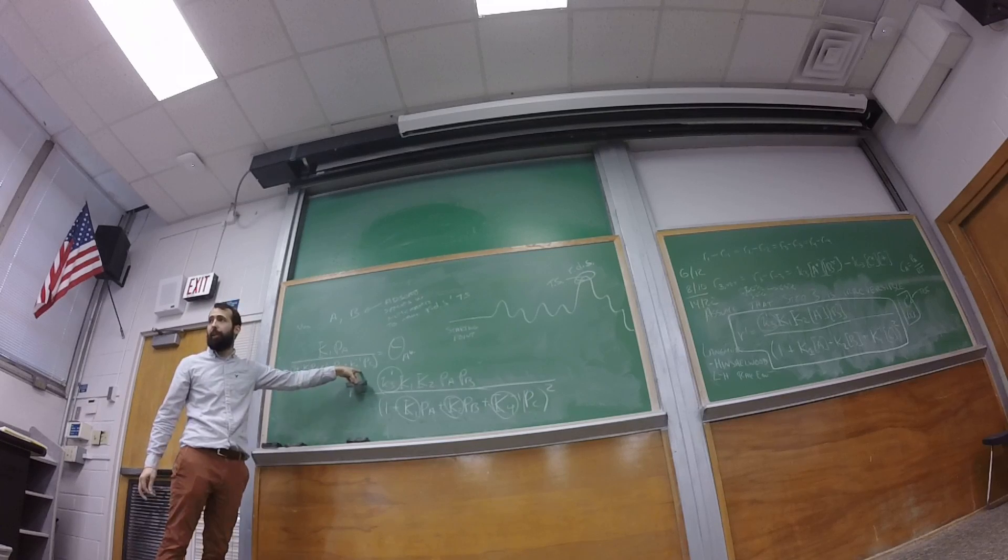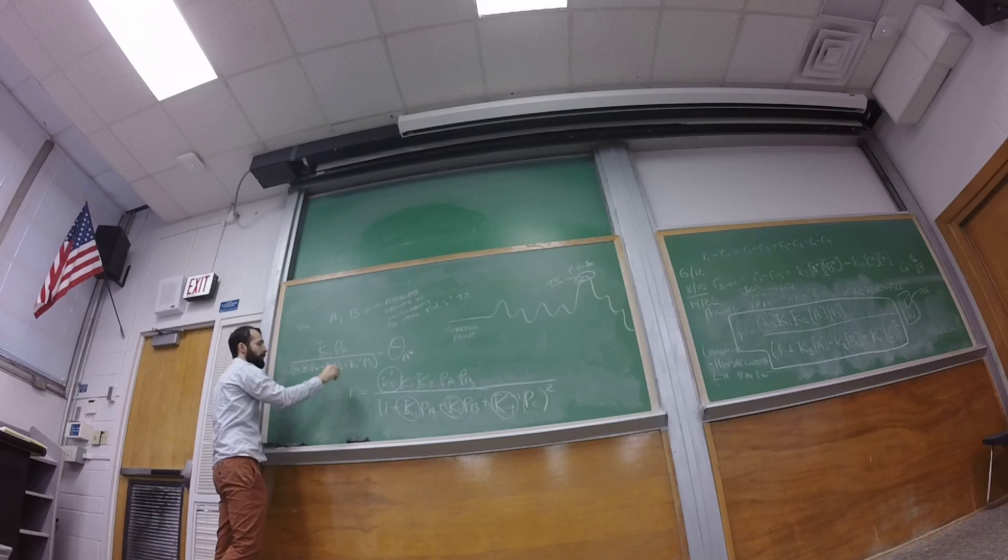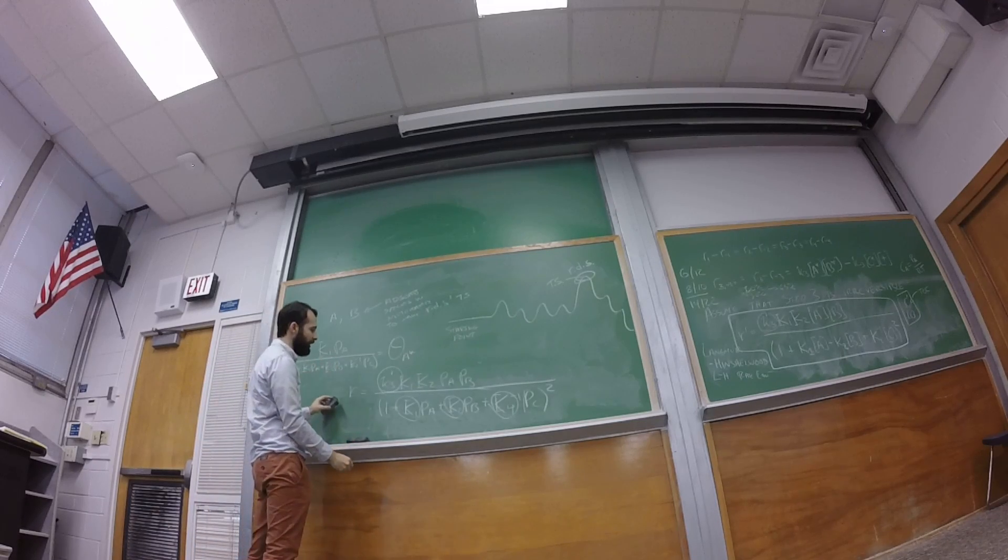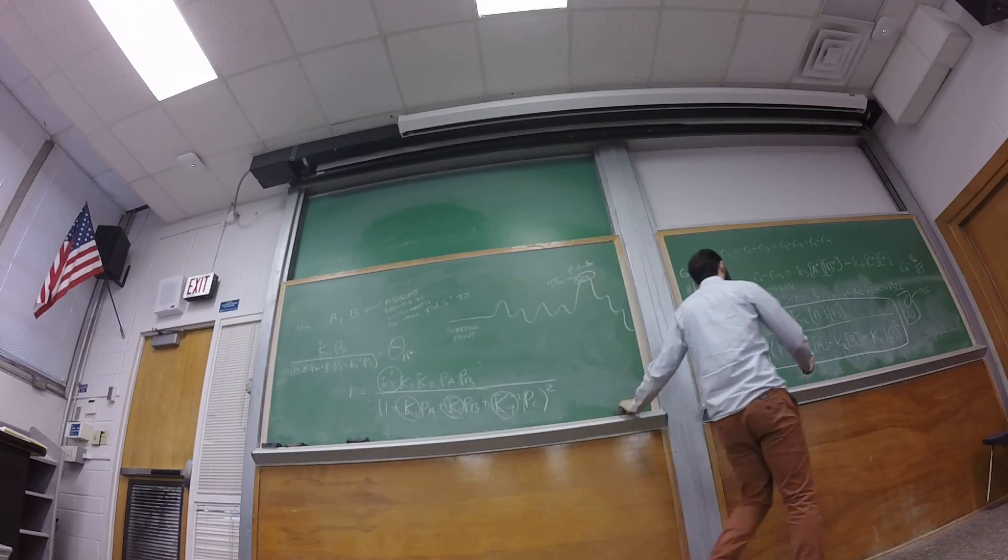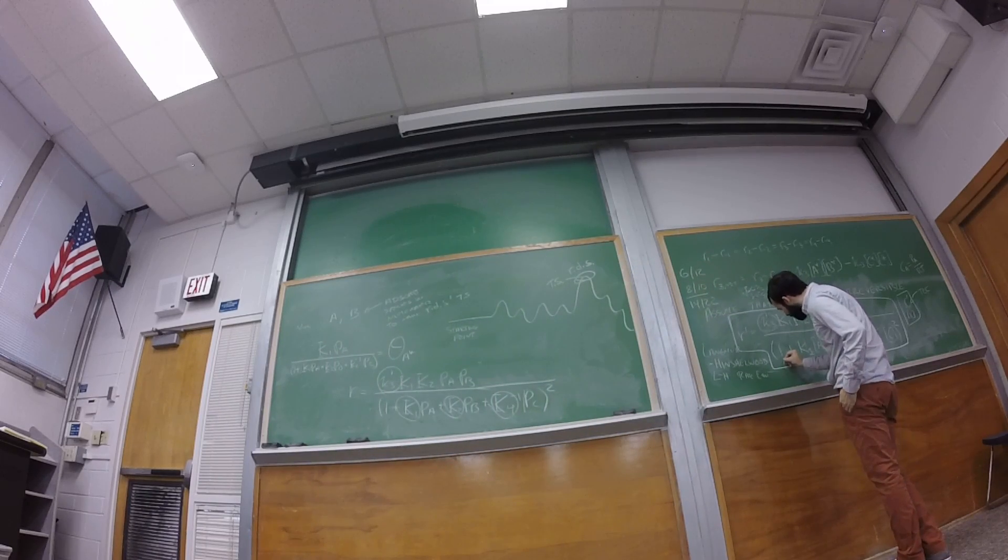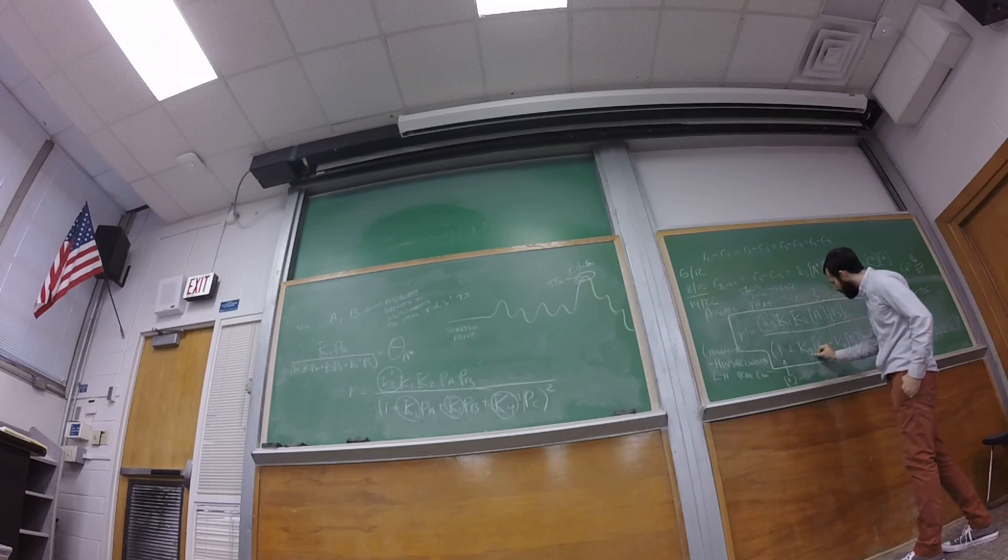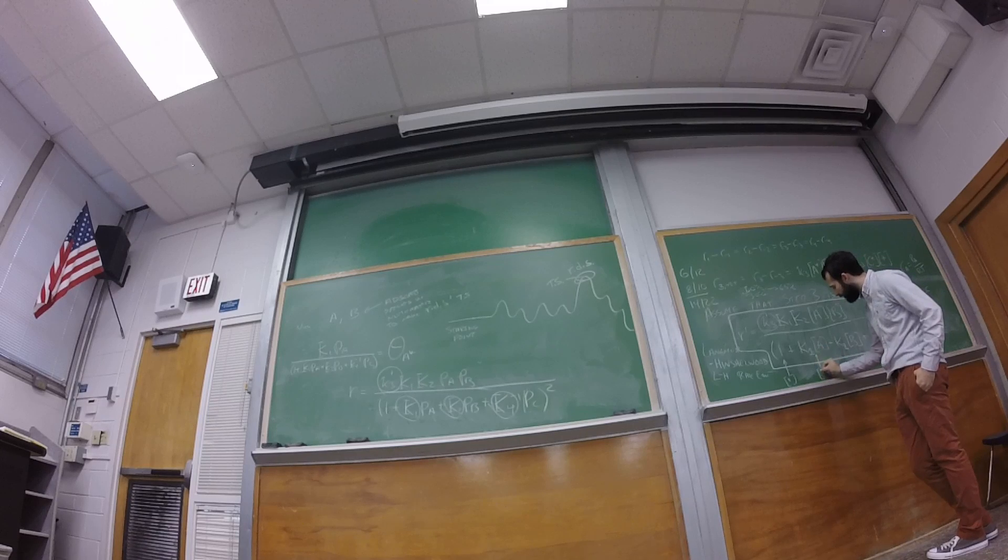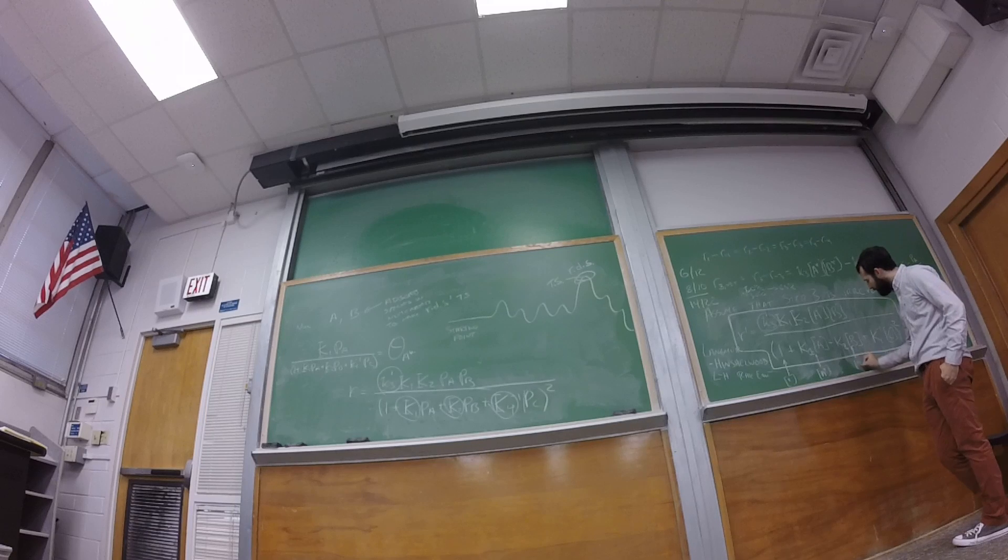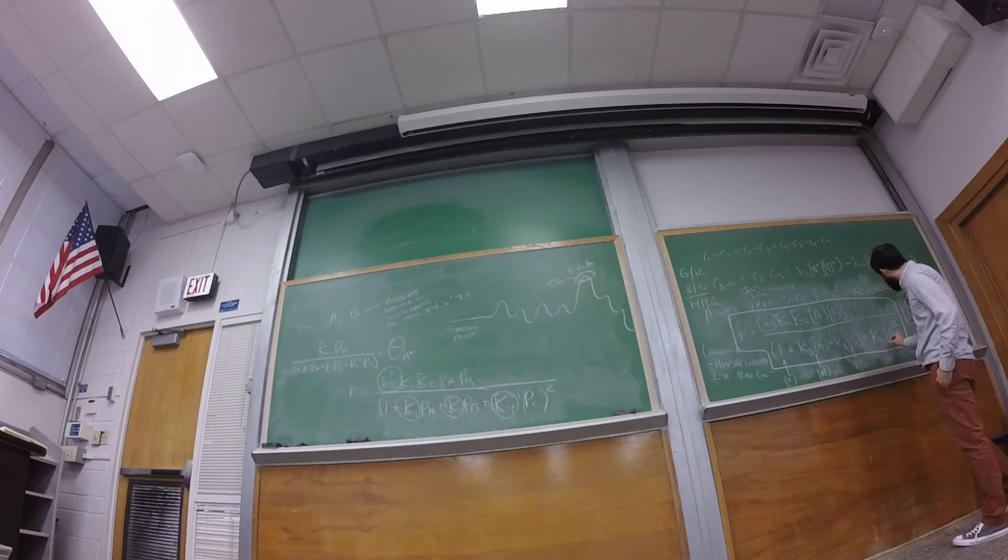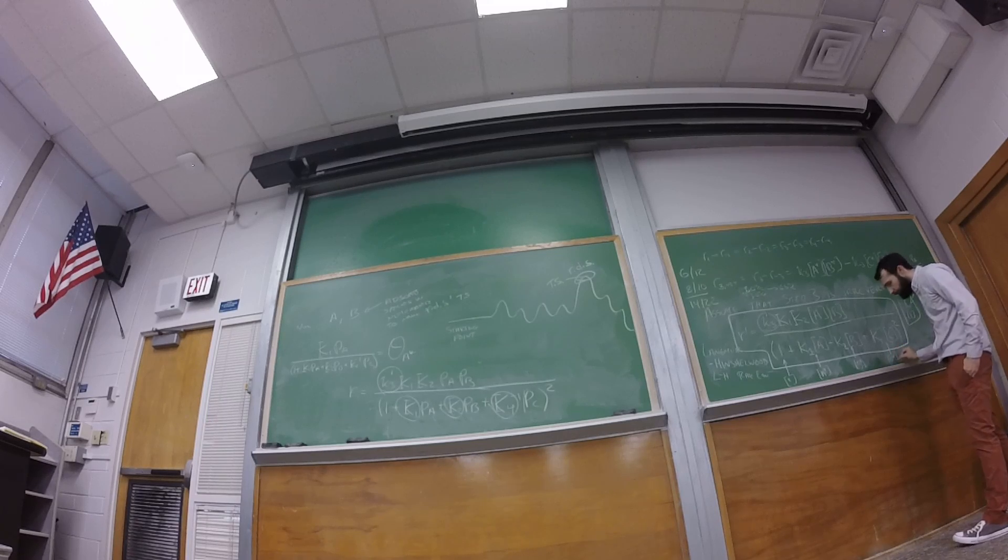And I can do it for these others as well. I can do it for A, B, and C. So when you see these denominator terms, I didn't really leave myself a lot of room to write, what you want to think about is this is related to the concentration of empty sites, this is related to the concentration of A on the surface, B on the surface, and C on the surface.